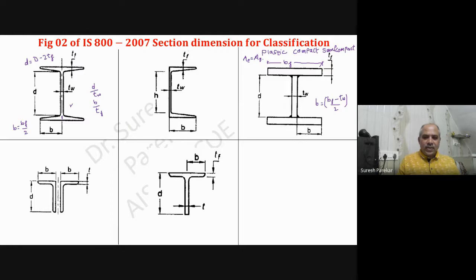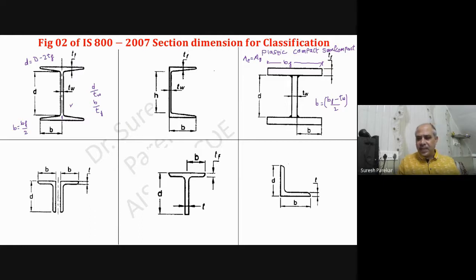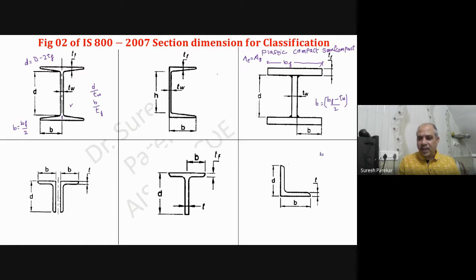Then we have the double angle section (BT), T-section, channel angle sections, and angle sections. For angle sections we have three criteria: b by t, d by t, and (b plus d) by t, with values 15.7 and 25.